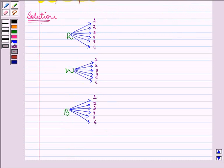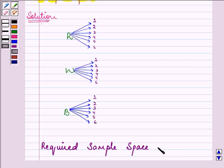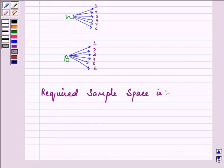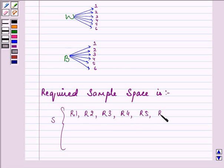So the required sample space is... With the red die, we have an option of getting either number one, two, three, four, five, or six.